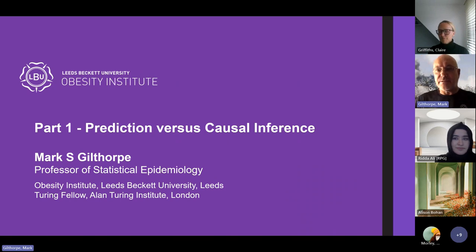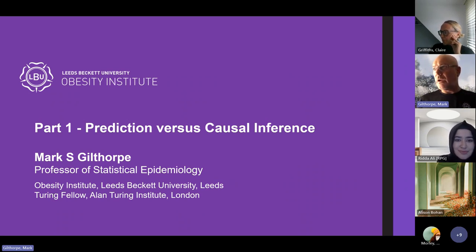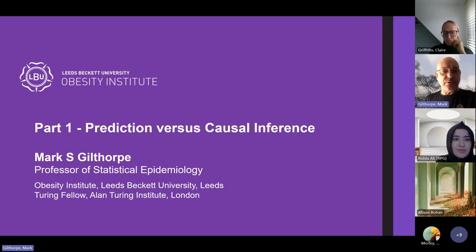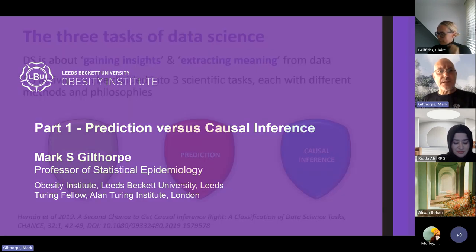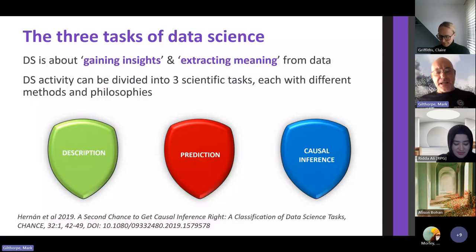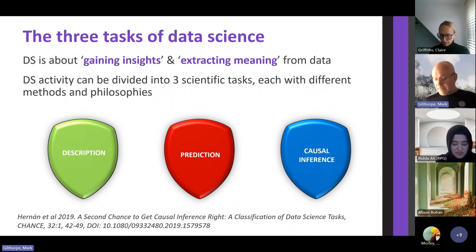This will be two-part. I'm going to introduce some of the methodological concepts — not heavy in theory, but nevertheless methodological. Then Rida is going to introduce an illustrative example. To introduce the Table 2 Fallacy and explain its relevance, I'll first discuss the importance of the difference between prediction and causal inference, starting with an overview of the three pillars of data science as classified by Miguel Hernan from Harvard.